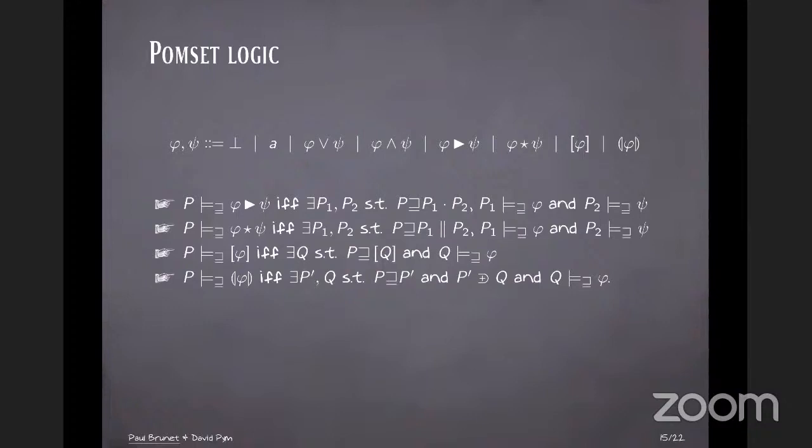So for this reason we introduce an assertion language, which we call Pomset logic, which looks like this. So we have some constant to denote the empty Pomset and atomic Pomsets. We have Boolean connectives. And then we have two separating conjunctions, one for sequential separation and the other for parallel separation. And then we have two modalities, a box modality and a context modality. So I'm going to explain the context modality in the next slide.